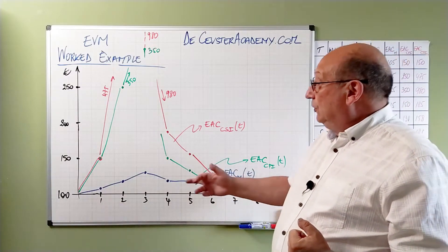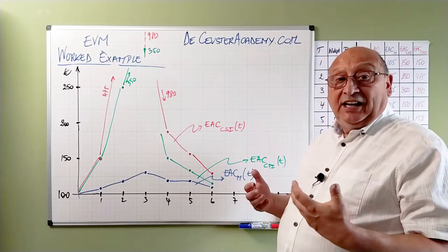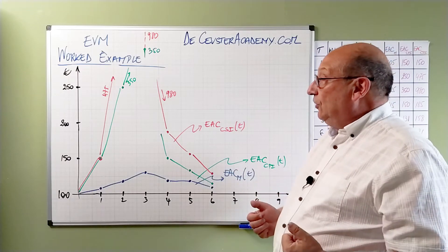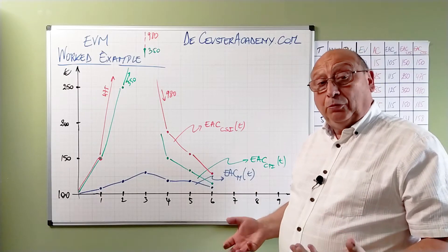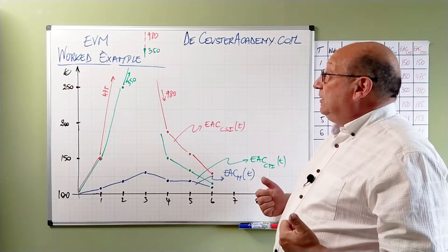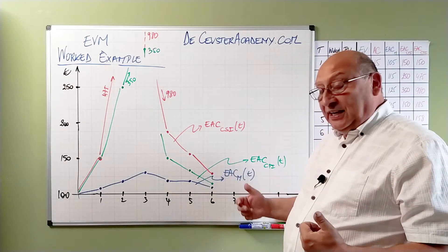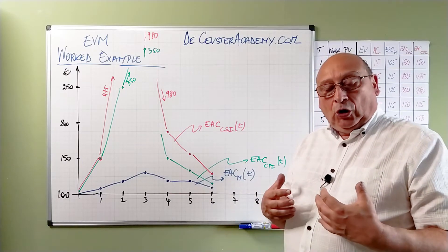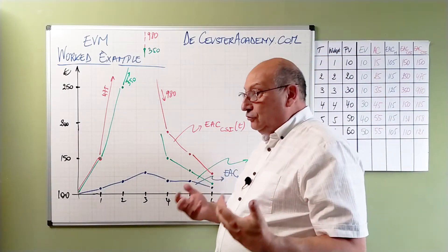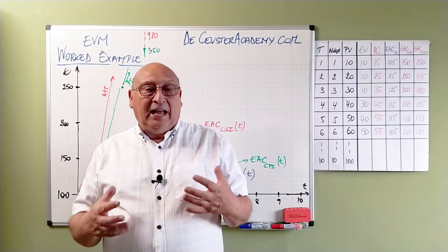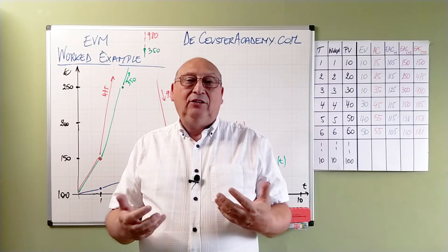In periods 2 and 3, this leads to very dramatic numbers. The CSI-based estimate goes to 475K — almost five times the original — and in period 3, almost 10 times the original value. But later, thanks to the effort made, the parameters come back together again. This is a good evolution because our actions helped bring us back close to schedule and budget.